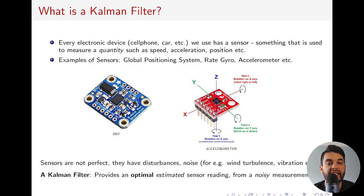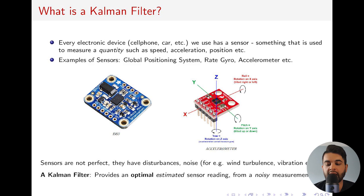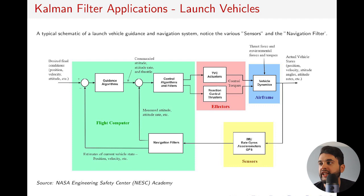You also have things like turbulence — the plane shakes, so the sensors won't give you an accurate value. The turbulence hits the sensor, the wind creates noise, and the sensor is not perfect. This is where the Kalman filter comes into play — it provides an optimal sensor reading from a noisy measurement. This noise is uncertainty; you can't predict it. Rain, snow, and wind can all create noise on your system. In this picture I have a quick example of how a Kalman filter works on a launch vehicle.